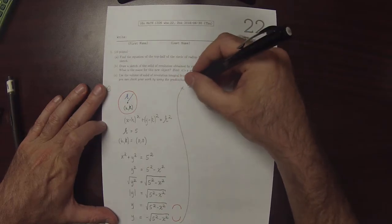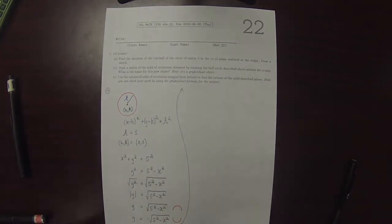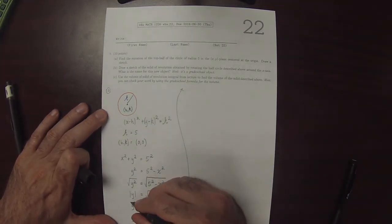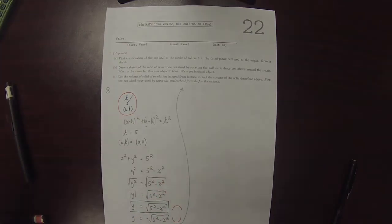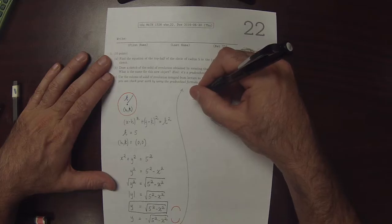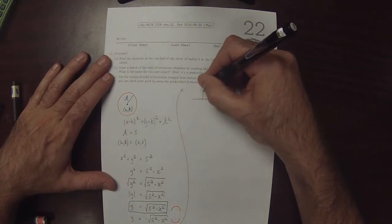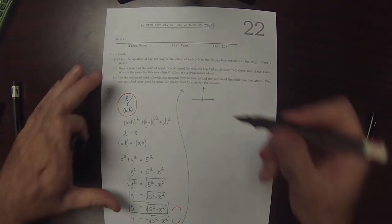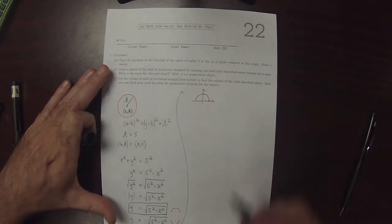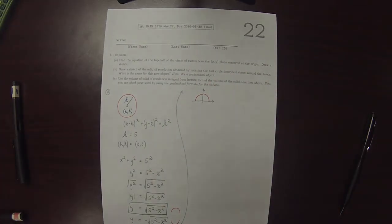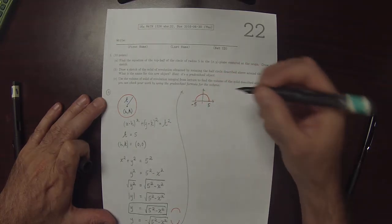So for part A continuing, this one in green is the equation, and the sketch is this. So that's from negative 5 to 5.